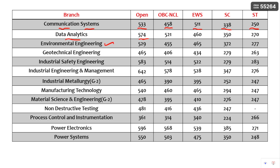Coming to Environmental Engineering, it is 529 in Open category and EWS is 465; all other cutoffs are given. Next are Geotechnical Engineering, Industrial Safety Engineering, Industrial Engineering and Management, Industrial Metallurgy — I have mentioned here clearly that it is for Group 2. Similarly, Manufacturing Technology, Material Science and Engineering, and Non-Destructive Testing — which is also a specialization in Civil Engineering — has a cutoff of 481. Process Control and Instrumentation, Power Electronics, and Power Systems cutoffs are also shown here. You can pause the video and go through the cutoffs for your category and branch.